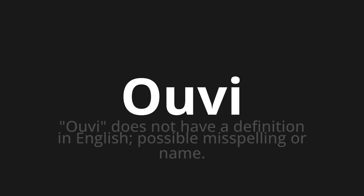Welcome to this pronunciation video. Today we will be focusing on a new word that you might find challenging or intriguing. So let's dive into today's word: O-V. O-V does not have a definition in English — possible misspelling or name.